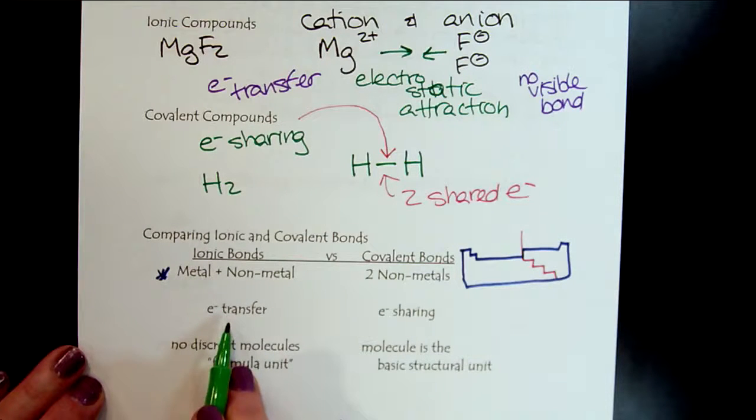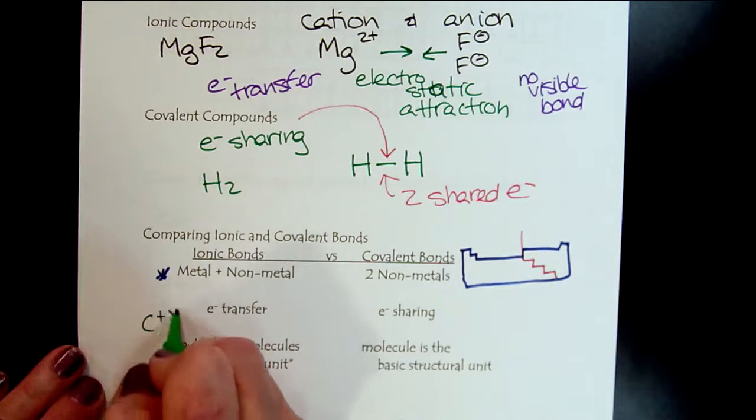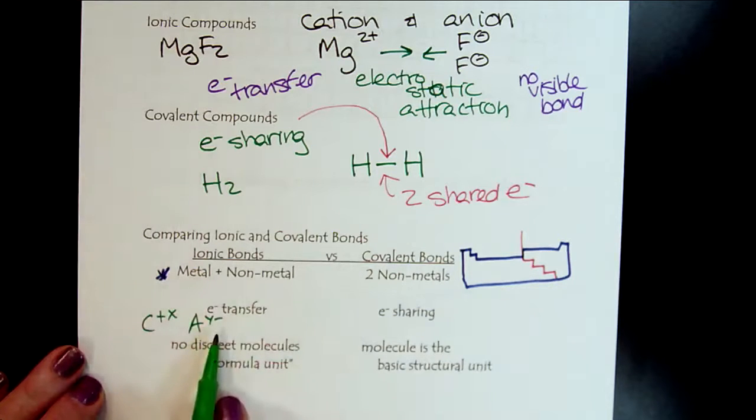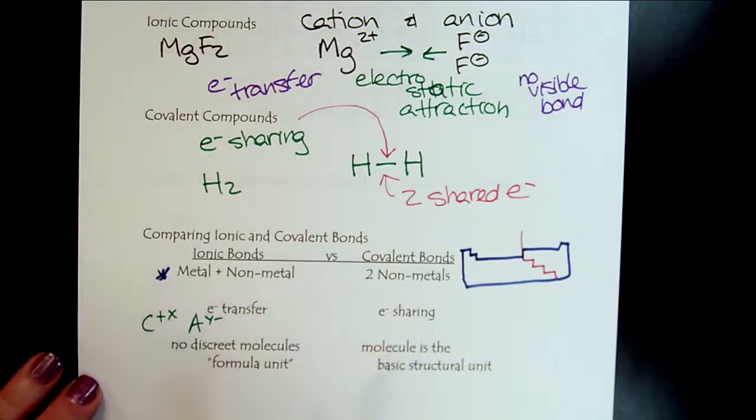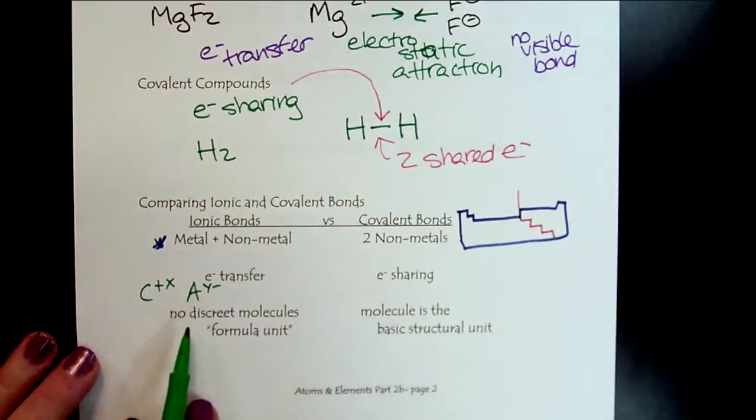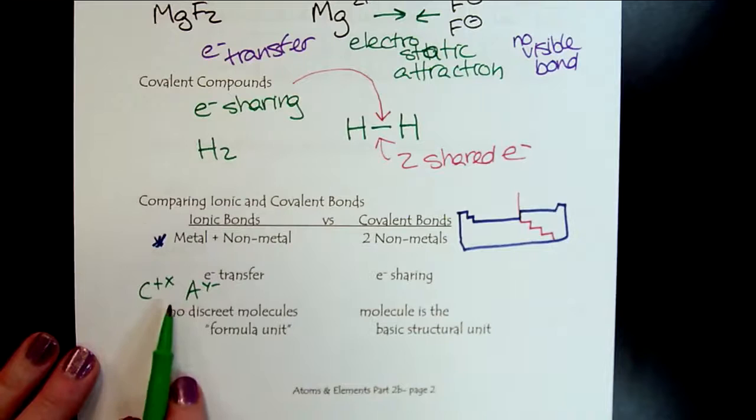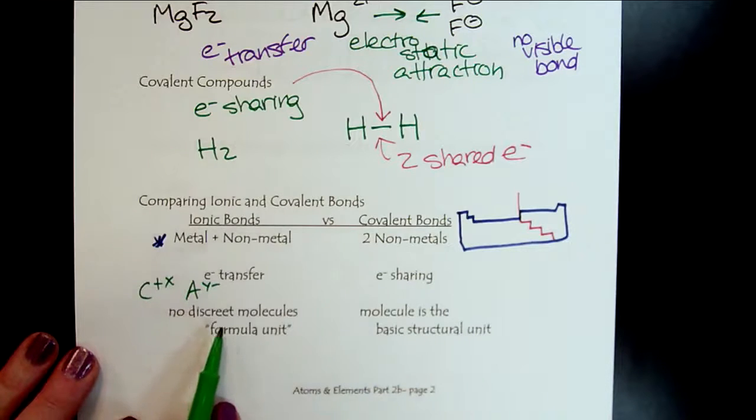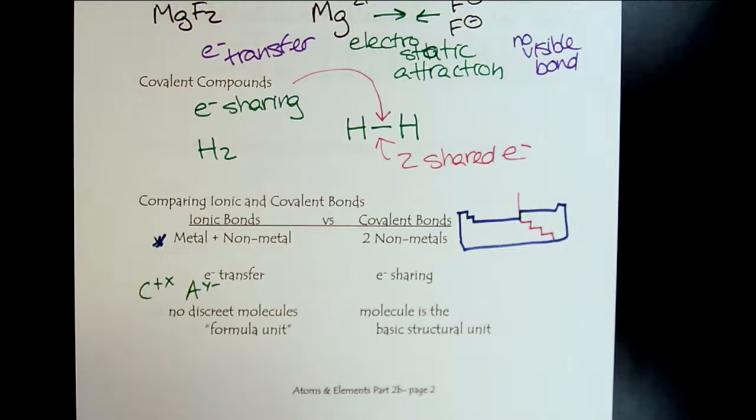We have electron transfer here. So we're going to have cations and anions with full charge. Here we have electron sharing because the cations and anions can come together in a variety, like if you look at salt.